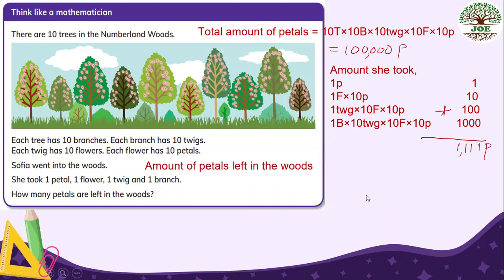So our last step is, amount of petals left in the woods. So we can find, this is total amount of 100,000 petals. Amount she took is 1,111 petals. And also, we subtract 10. Or this borrowed from 10, 9. And the last one is 10. 10 minus 1, 9. 9 minus 1, 8. 9 minus 1, 8. And 9 minus 1, 8. The last one is 9. So this is, amount of petals left in the woods. This is 98,889 petals.